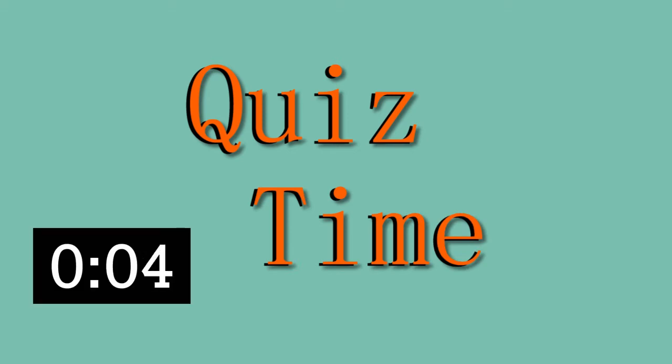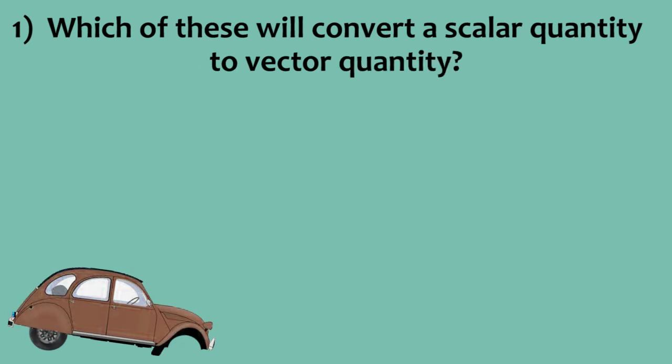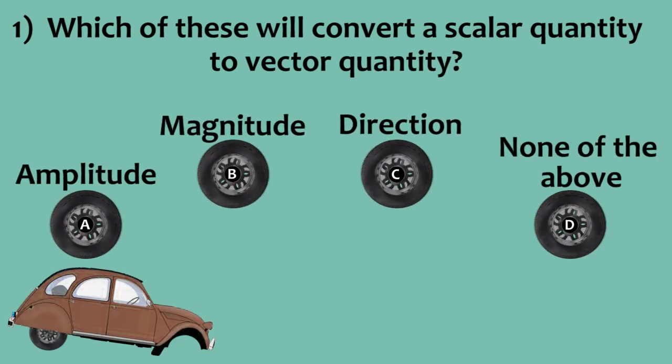Only a few seconds will be given for each question. So, think hard and think fast. All the best. Which of these will convert a scalar quantity to a vector quantity? Amplitude, magnitude, direction, none of the above.